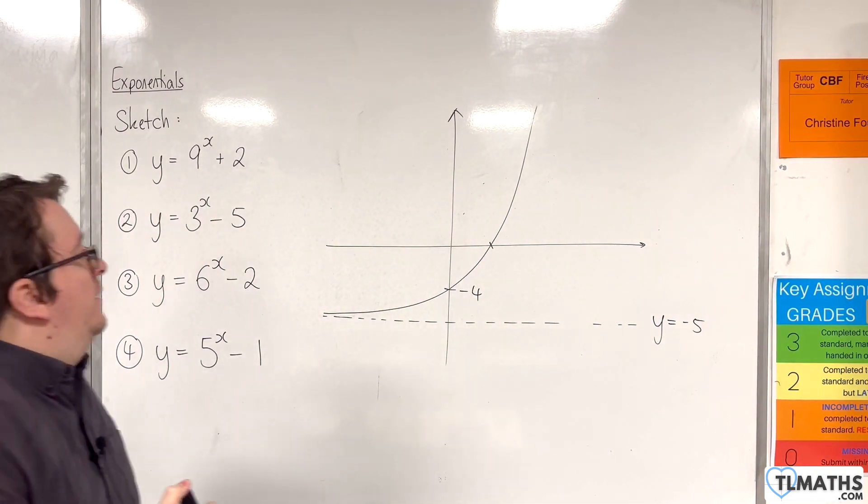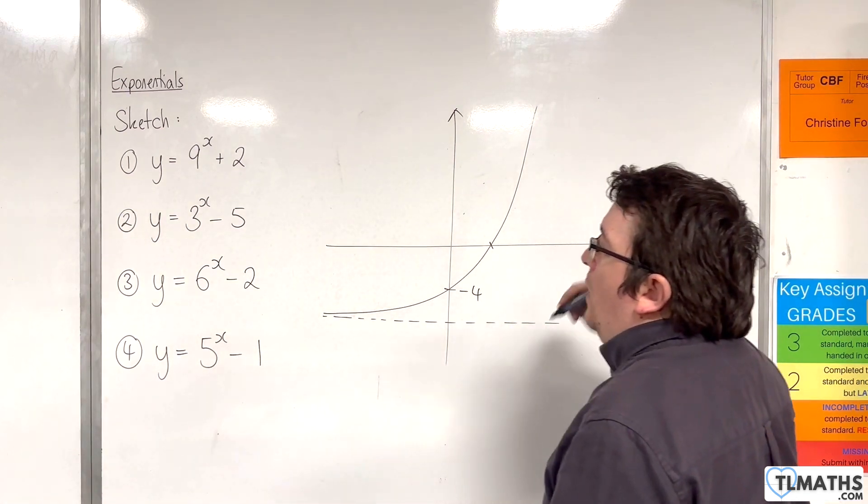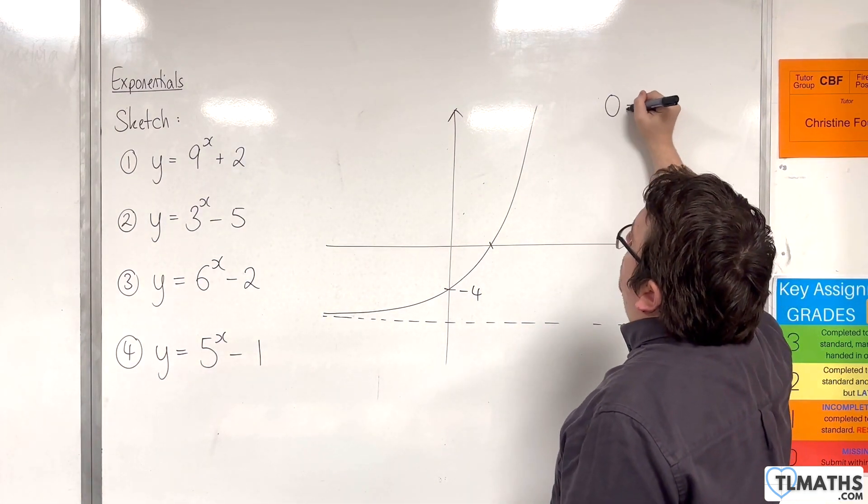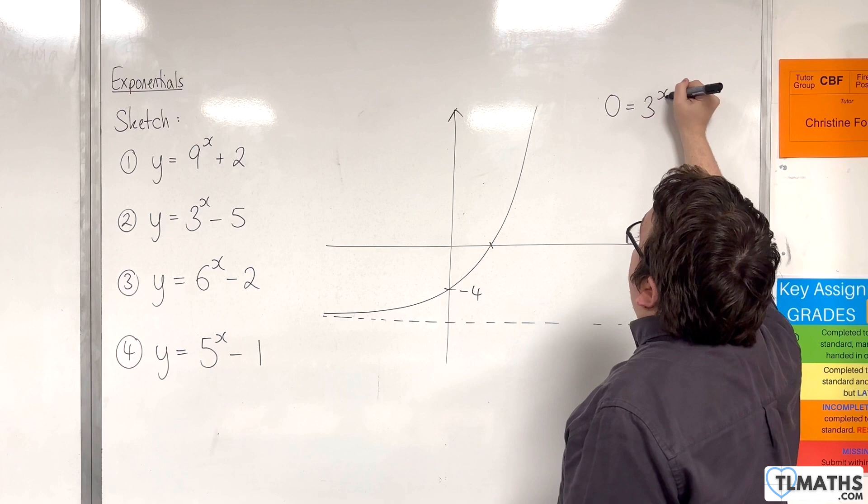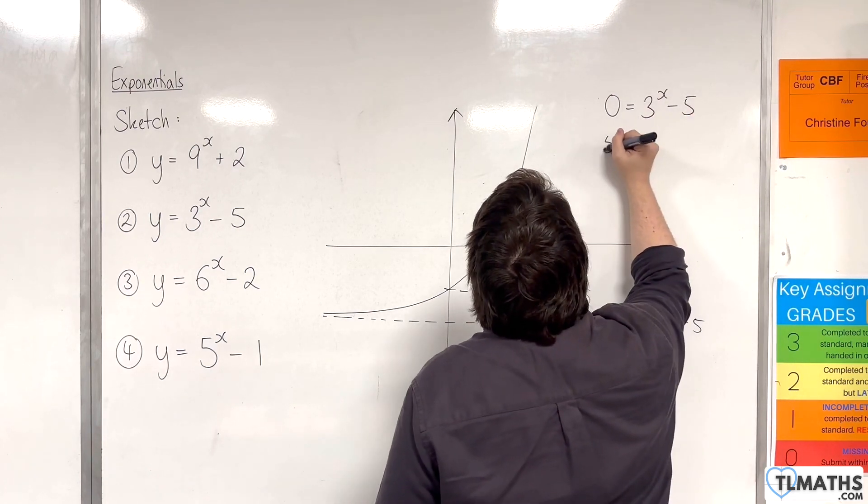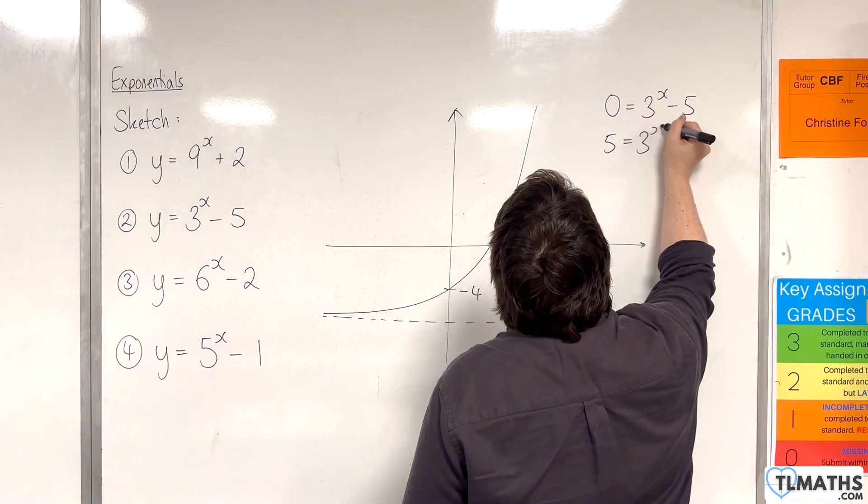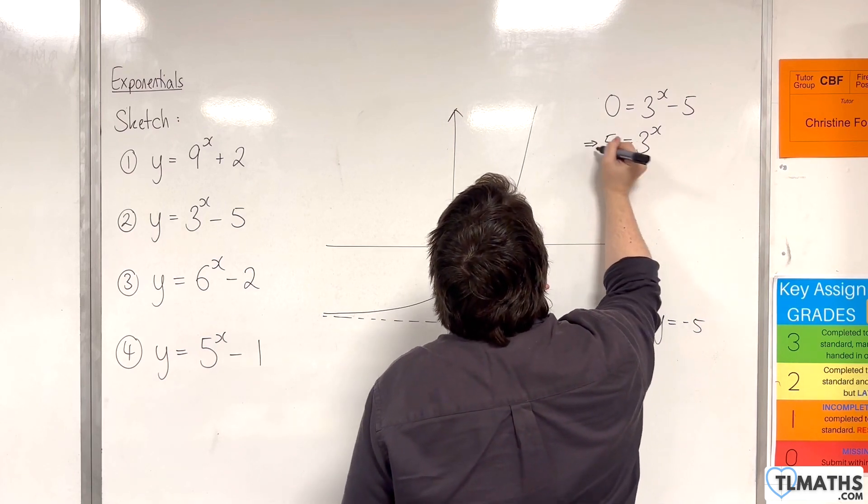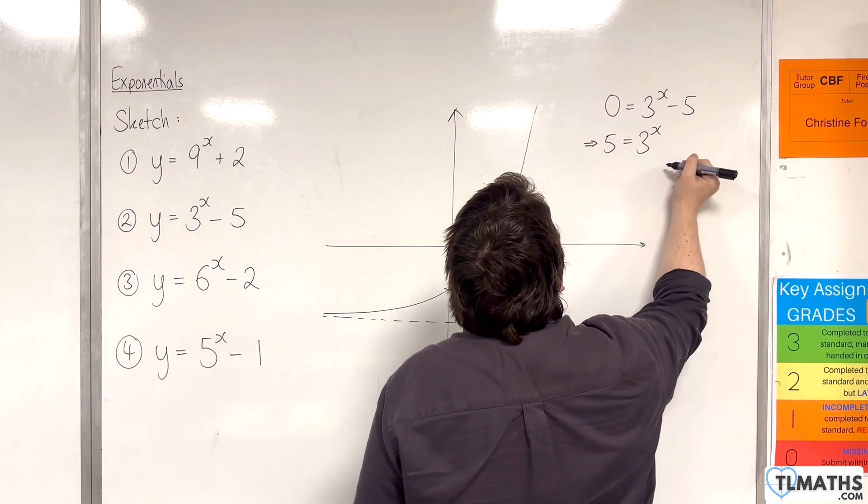Now where it crosses the x-axis, we need to put the y equal to 0. So 0 is equal to 3 to the x take away 5. And we're going to add 5 to both sides. And then we need to solve this equation.